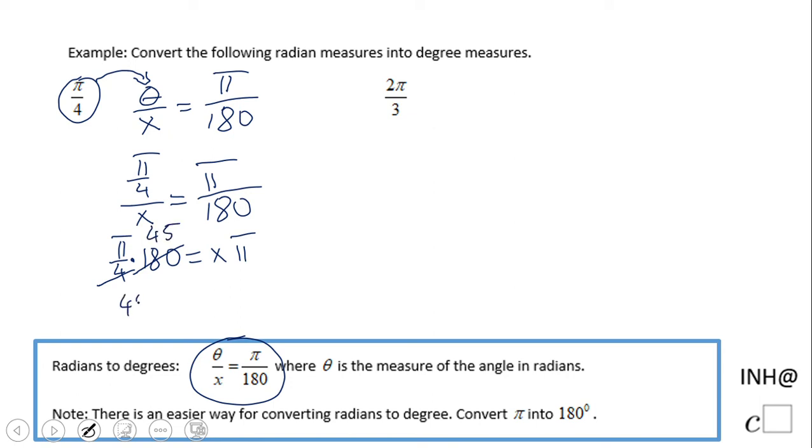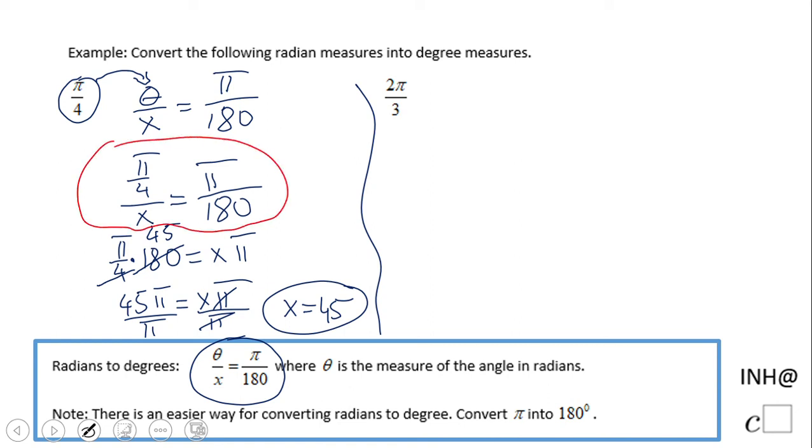We have 45 pi equals x times pi. Divided by pi, we get x equals 45. And I know this method may look only a bit complicated, especially because of this complex proportion, right? Another way to do it, and I put it here, is convert pi into 180. So that's probably the easiest way. So we have 2 pi over 3, and...